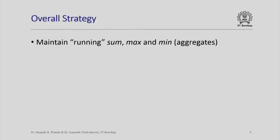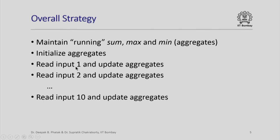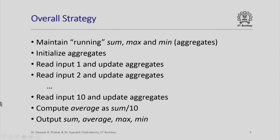Here is what an overall strategy might look like. We might want to maintain a running sum, max, and min value — some kinds of aggregates of the marks we are seeing. We can initialize these aggregates to appropriate values, then read each input, update the aggregates, and after doing this for all 10 students, compute the average as sum divided by 10 and output sum, average, max, and min.